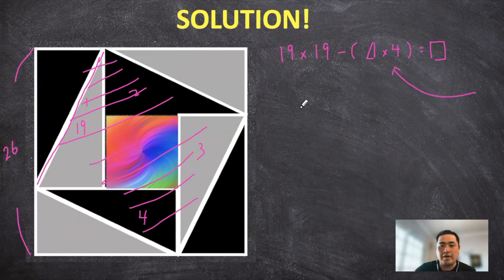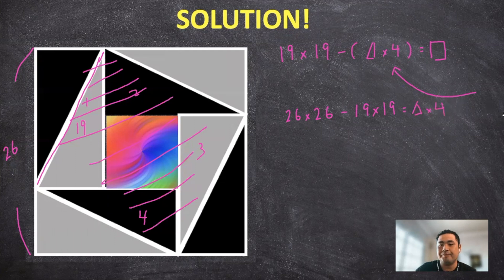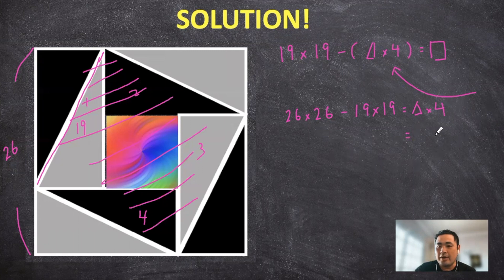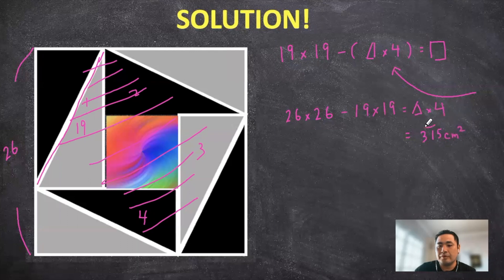So if we can take the area of the outer square, which is 26 times 26, and subtract it from the inner square, that'll give us the area of the four triangles that we need. So once we do the calculations, that should come out to an area of 315 square centimeters. So that's the area of the four triangles right here.